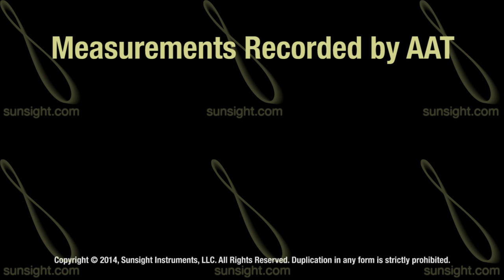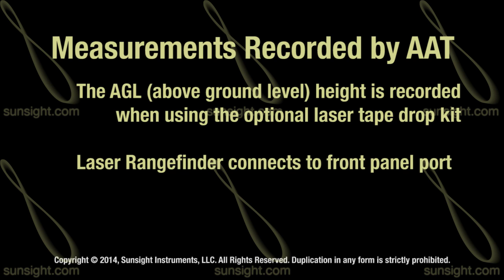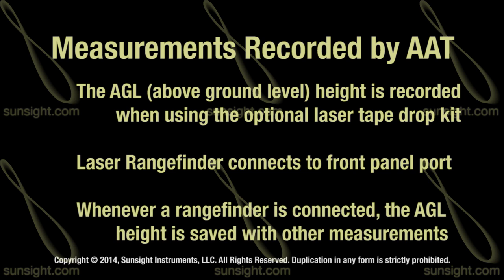In addition to those basic measurements, the above ground level or AGL height of the antenna will be recorded when using the optional laser tape drop kit. The rangefinder connects into the port on the upper left front of the tool, and whenever a laser rangefinder is connected to the AAT, the information from the rangefinder is saved along with all of the other measurements.